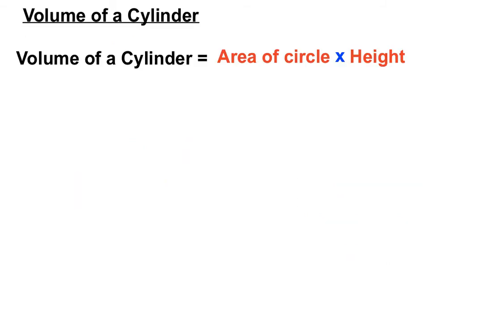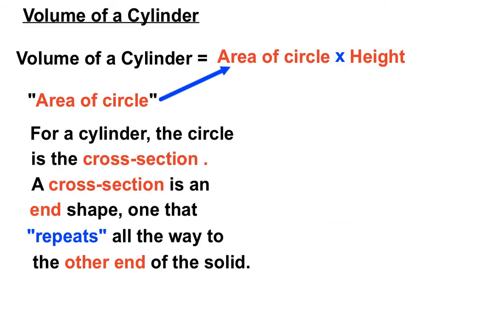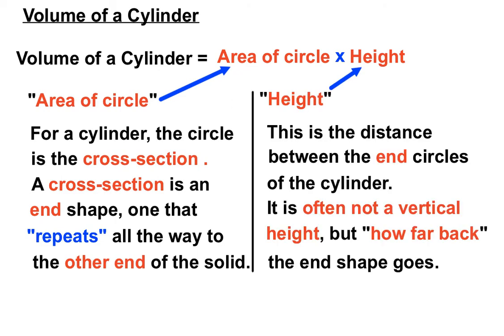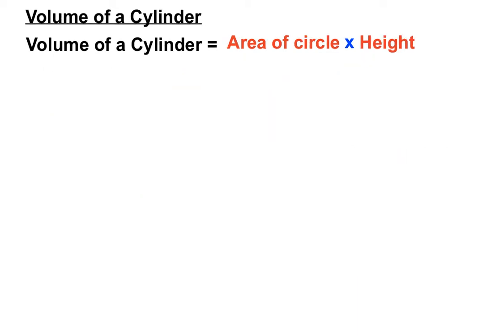And what did we do? We had an area of a circle times a height. We had to be careful. The area of the circle is known as the cross-sectional area in this case, so that's why we were keen to get the area of the circle happening. The height is the distance between the end circles. Sometimes it's vertical, but sometimes it's how far back you have to go to get from one circle to another in a cylinder.